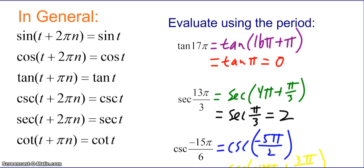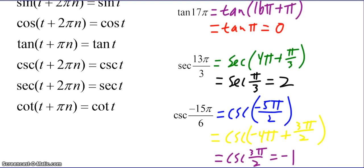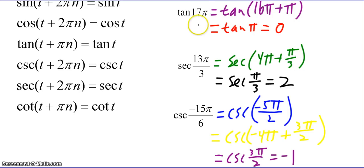Tangent of 17π: we can rewrite that as tangent of (16π + π), which is the same as tangent of π, which is 0. The secant of 13π/3 is the same as secant of (4π + π/3), so it's the same as secant of π/3, which is 2. The cosecant of negative 15π/6 simplifies to cosecant of negative 5π/2, then cosecant of (negative 4π + 3π/2), which is cosecant of 3π/2, which equals negative 1. The work shown is to help you understand why you get the answer you do.